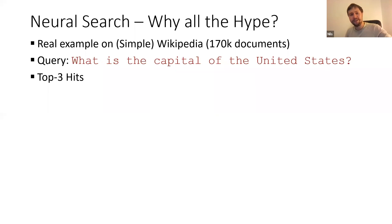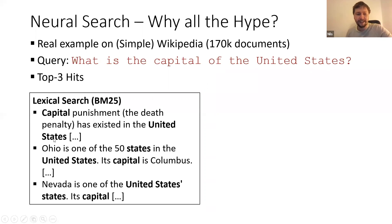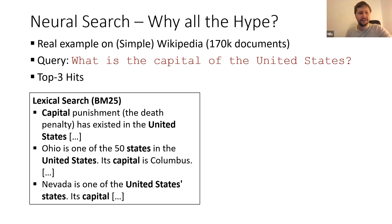An example I show here is the following. You take the simple English Wikipedia — just because it has fewer documents than the full English Wikipedia — and you ask a really simple question: what's the capital of the United States. If you do this with Elasticsearch, BM25, you get three results: first, capital punishment, because that article contains the word 'capital' and 'United States' quite often. Second is Ohio, because it's a state in the United States and has a capital. Third is Nevada, also a state with a capital. From a lexical match these maybe make sense, but from a user perspective they are really bad.